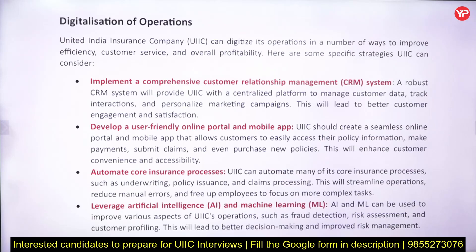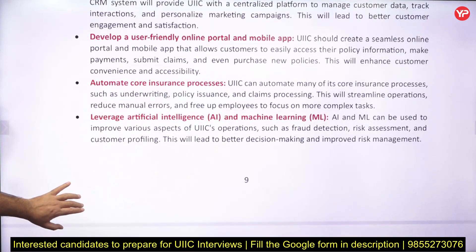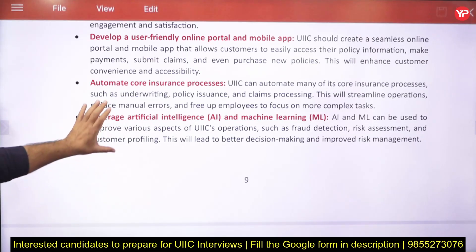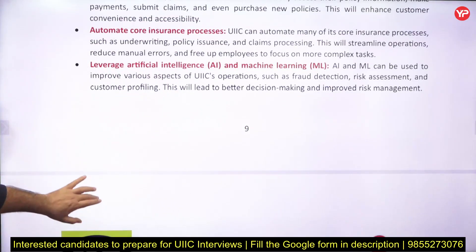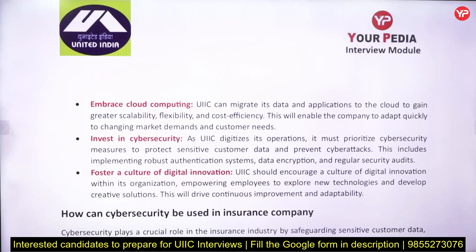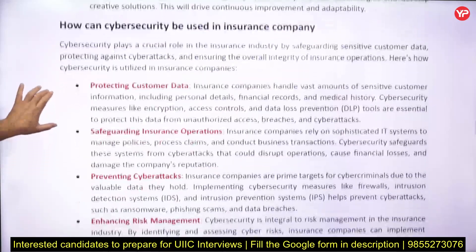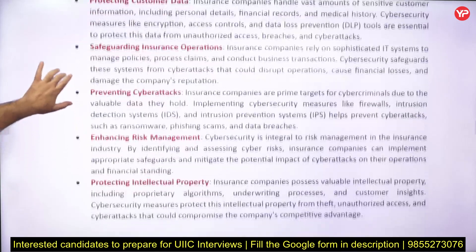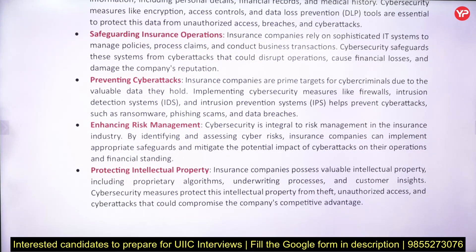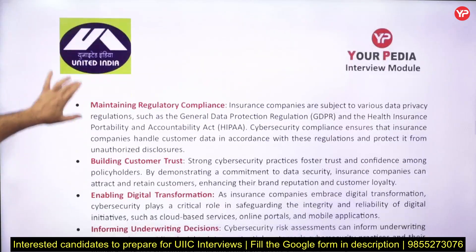The company should develop a user-friendly online portal and mobile app, automate insurance processes, and leverage artificial intelligence and machine learning for risk management and decision making. Emerging technologies like cloud computing should be used for greater efficiency, and there should be a culture of digital innovation. Cyber security is also important in insurance companies for protecting customer data, safeguarding insurance operations, preventing cyber attacks, enhancing risk management, and protecting intellectual property.